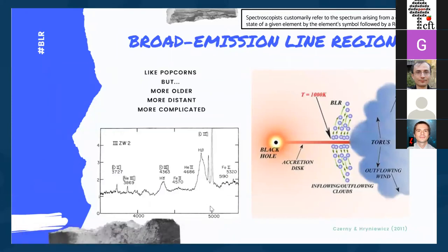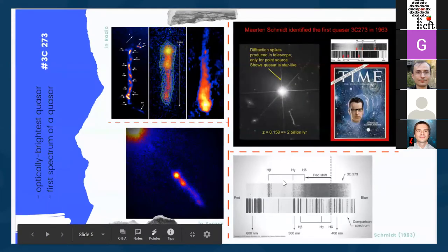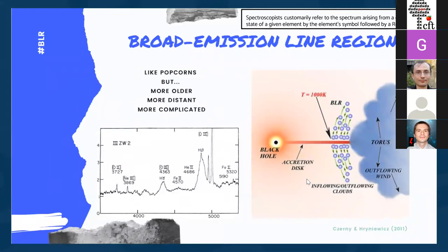Before going further, it's important to associate the lines seen in the spectra with the physical regions they originate from. This brings us to the broad emission line region. We have a central supermassive black hole accreting matter; the accretion disk is the manifestation of this accreting matter. The matter gets heated up and the photons generated from this heat the nearby environment, most notably the broad line region — gas-rich media that get photo-ionized by incoming photons from the accretion disk.